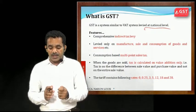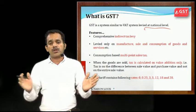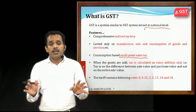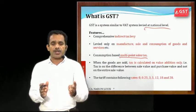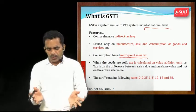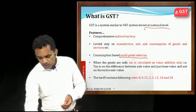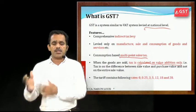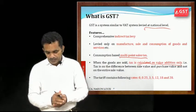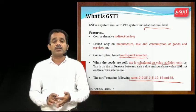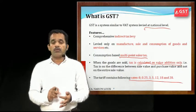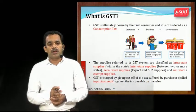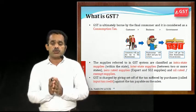GST is a consumption-based multipoint sales tax, meaning it is applicable at all stages — production, sale, distribution, and retail sale to the customer. When goods are sold, GST is calculated only on the value addition. The various GST rates are: 0%, 0.25%, 3%, 5%, 12%, 18%, and 28%.